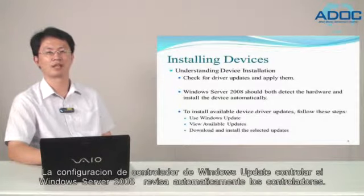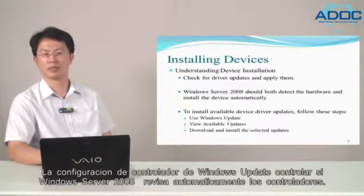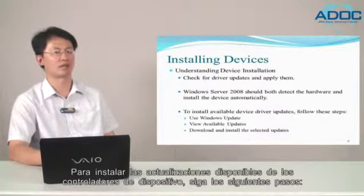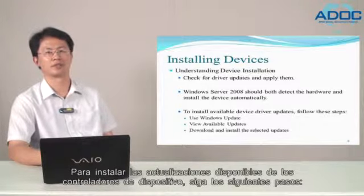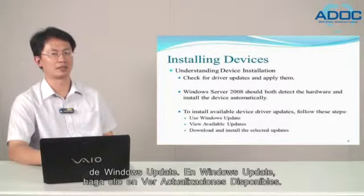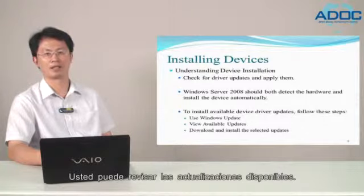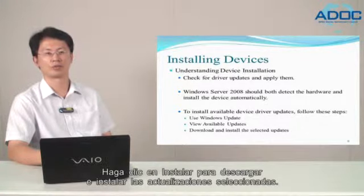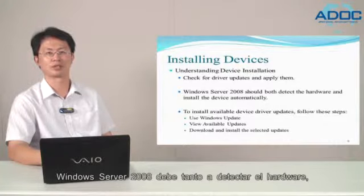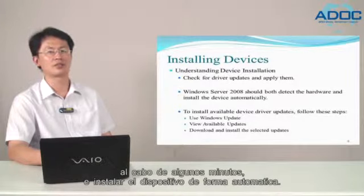Windows Update driver settings control whether Windows Server 2008 checks for drivers automatically. To install available device driver updates, open Windows Update and click View Available Updates. Review the available updates and check Install to download and install the selected update. After you have installed the device driver, Windows Server 2008 should both detect the hardware within several minutes and install the device automatically.